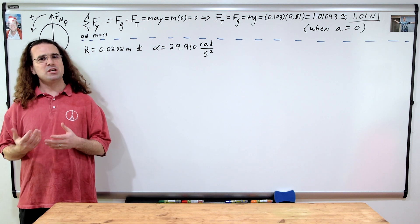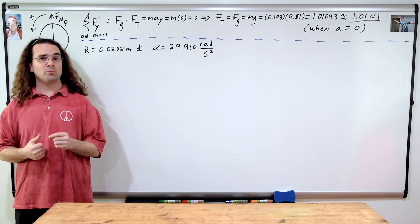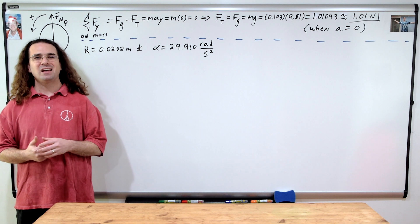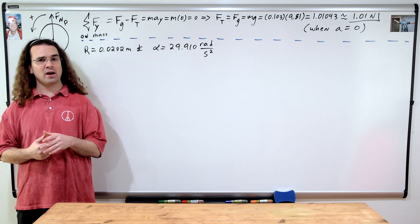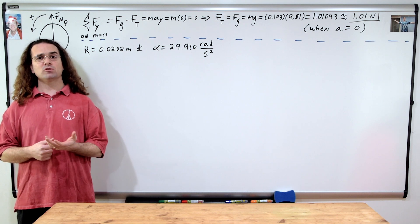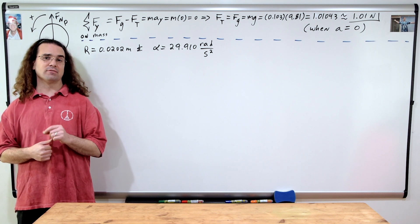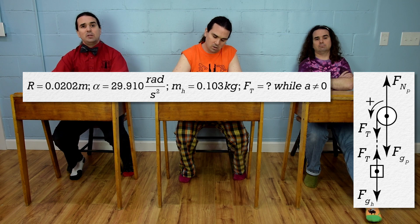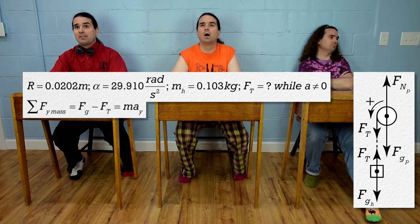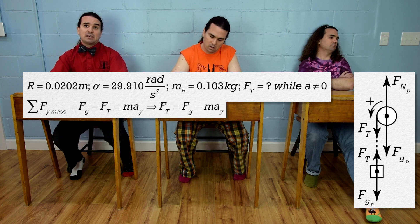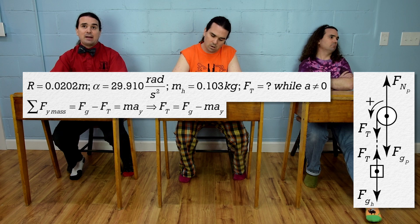Billy, considering we know the radius of the pulley is 0.0202 meters, and the angular acceleration of the pulley is 29.910 radians per second squared, please solve for the force of tension after I let go of the pulley. Actually, we just used the same equation Bobby used, only the acceleration in the y-direction is no longer 0. Therefore, the force of tension equals the force of gravity minus mass times acceleration in the y-direction.